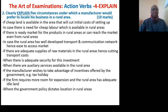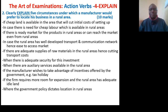Question 2: Clearly explain 5 circumstances under which a manufacturer would prefer to locate his business in a rural area. If cheap land is available in the area, that will cut initial costs of setting up. In case there is need for cheap labor, which is available in rural areas. If there is a ready market for the products in rural areas, or the market can be reached from rural areas. In case the rural area has a well-developed transport and communication network, hence ease of access to market. If there are adequate supplies of raw materials in the rural areas, hence cutting transport costs.